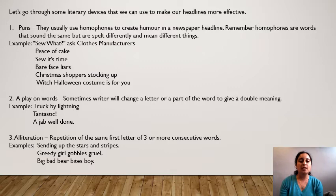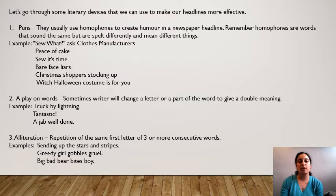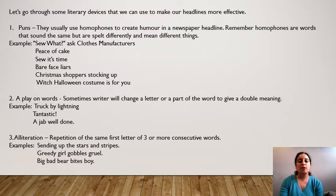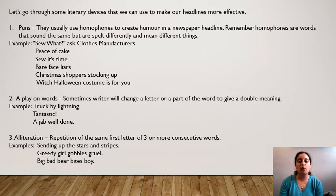Number two: play on words. This is when a writer changes a letter or part of a word to give a double meaning. For example, instead of 'struck by lightning' they've written 'truck by lightning' — and that was a story about a truck that was struck by lightning. 'Tantastic' and 'a jab well done' — a jab is like a needle, an injection. They were talking about vaccinations in that article, so 'a jab well done' instead of 'a job well done.' Number three: alliteration. We all know what alliteration is — it's the repetition of the first sound of a word in three consecutive words. So 'sending up the stars and stripes' has the repetition of the S. 'The greedy girl gobbles gruel' has the G. And 'big bad bear bites boy' has alliteration all the way through that headline as well.